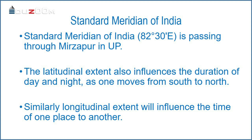The longitudinal extent also influences the duration of day and night. As one moves from south to north, the longitudinal extent will influence the time from one place to another. For example, if a person travels from Washington DC to New Delhi, the time in India will be 9 hours and 30 minutes ahead of Washington DC, USA. In the case of India, there is a time lag of 2 hours between the actual time of Gujarat and Arunachal Pradesh.